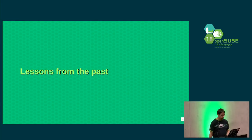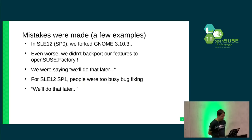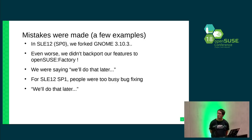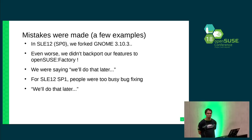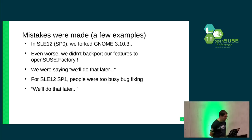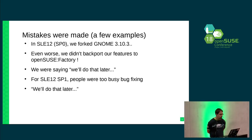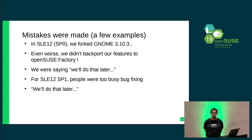First, lessons from the past — to try not to repeat mistakes but learn from them. In SLE 12 SP0, I worked initially on the desktop, so I'll take the desktop as a good example. We picked a GNOME version, 3.10.3, we did a lot of fixes and features, and we didn't push our changes to Factory.